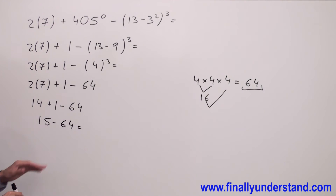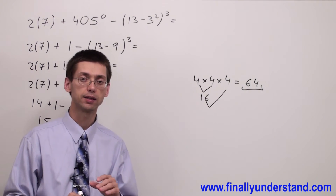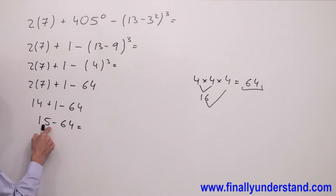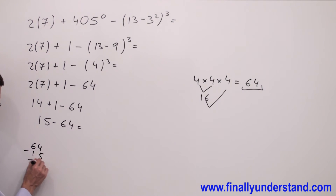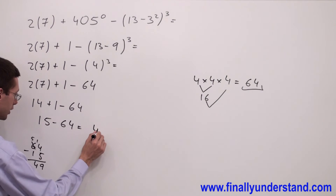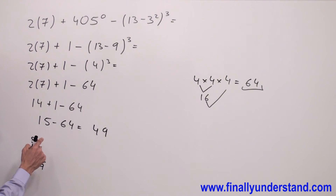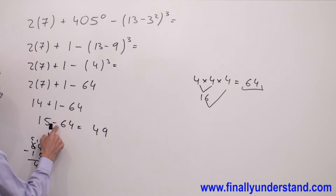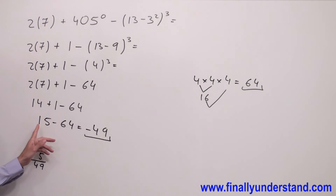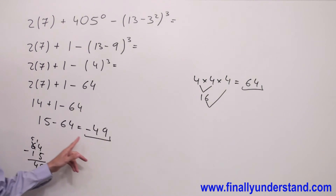Now I'm supposed to subtract a bigger number from a smaller number. You're supposed to remember the rule: any time you're subtracting a bigger number from a smaller number, you perform the subtraction of the smaller from the bigger and keep the sign of the larger number. So 64 minus 15: borrow 1 from 6, giving 14 minus 5 equals 9, and 5 minus 1 equals 4 — that's 49. The sign belongs to the bigger number, so the answer is negative 49. This is the solution.